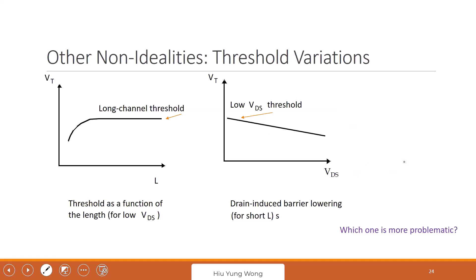Some non-ideality in the MOSFET. The one thing I want to talk about is the so-called threshold variation. Now, if we reduce the gate length, you find the threshold voltage will reduce for the same process.